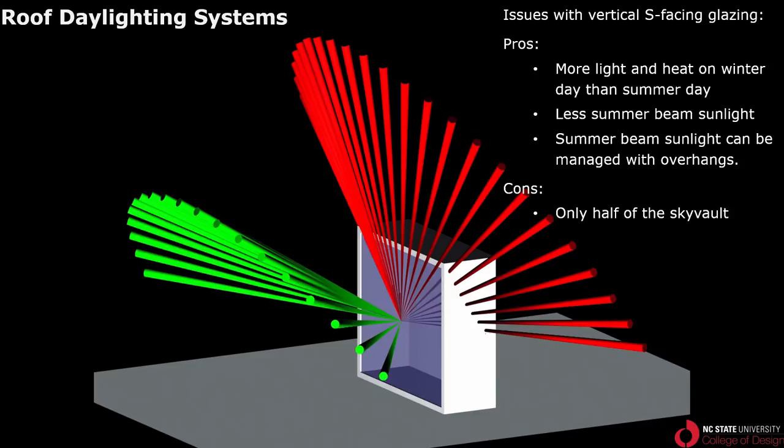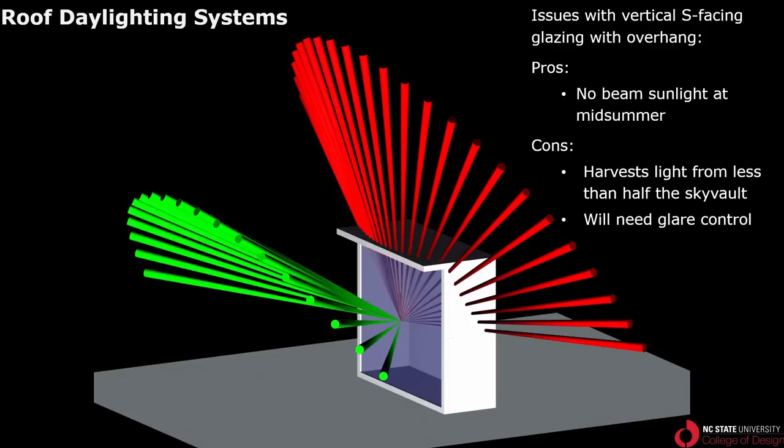So we talked about a lot of aperture orientations that are really bad. Let's talk about one that works fairly well, which is south-facing glazing. South-facing apertures give a better seasonal balance than any of the others we just talked about, receiving more light and heat in December than in the month of June. There is less beam sunlight on a summer day, and the beam sunlight that is incident on the aperture can be blocked by a modest overhang, as shown in the next diagram. So here you see the beam sunlight around midday at mid-summer is now being blocked by this overhang. Among the disadvantages of this configuration are the overhang causes the aperture to harvest light from less than half of the sky vault. So we've gone from the full sky vault for horizontal glazing to half of the sky vault for vertical glazing and now less than half of the sky vault for vertical glazing with an overhang.